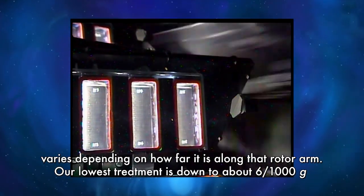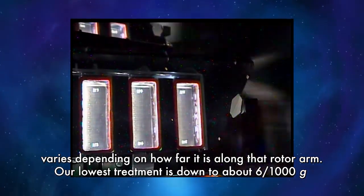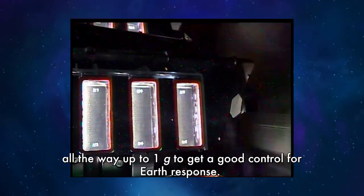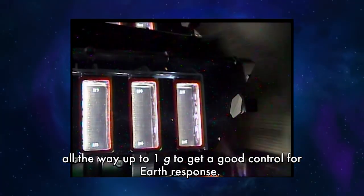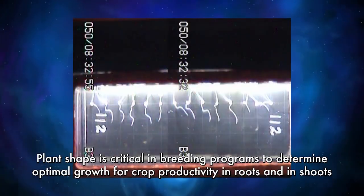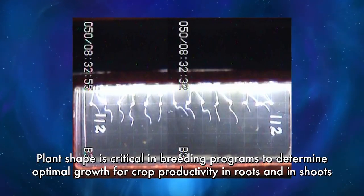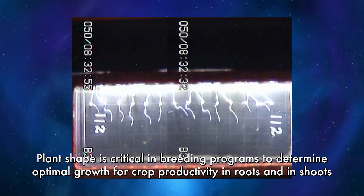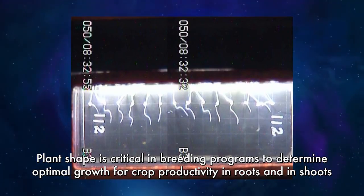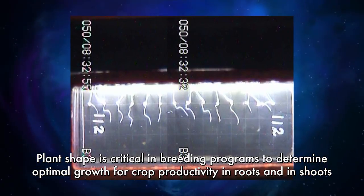Our lowest treatment is down to about six one-thousandths of a G, all the way up to one G to get a good control for Earth response. Plant shape is critical in breeding programs to determine optimal growth for crop productivity in roots and in shoots.